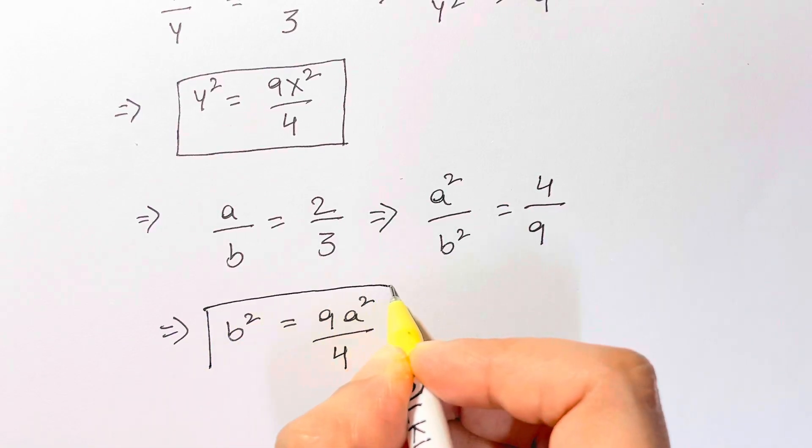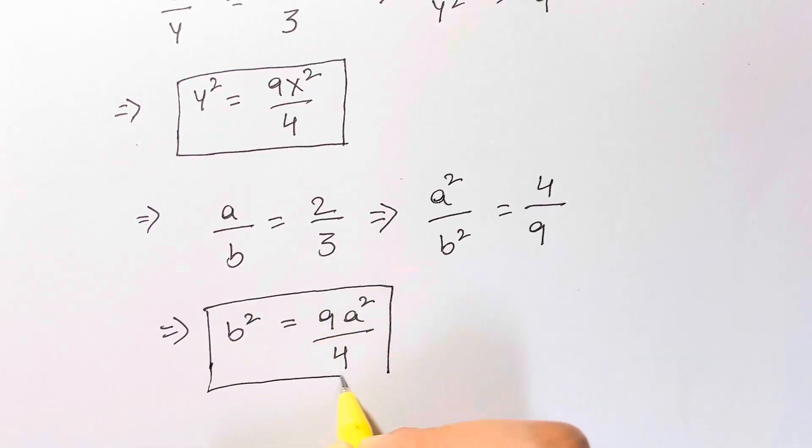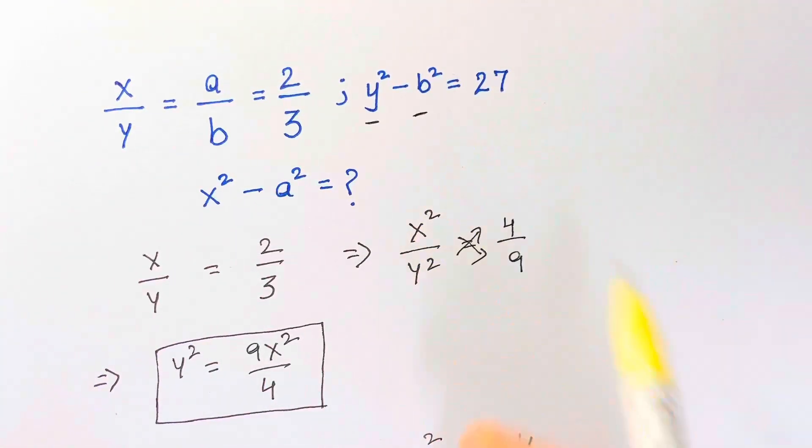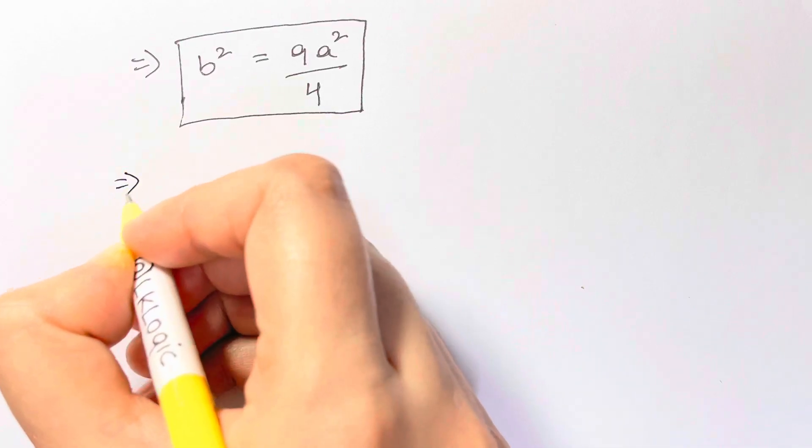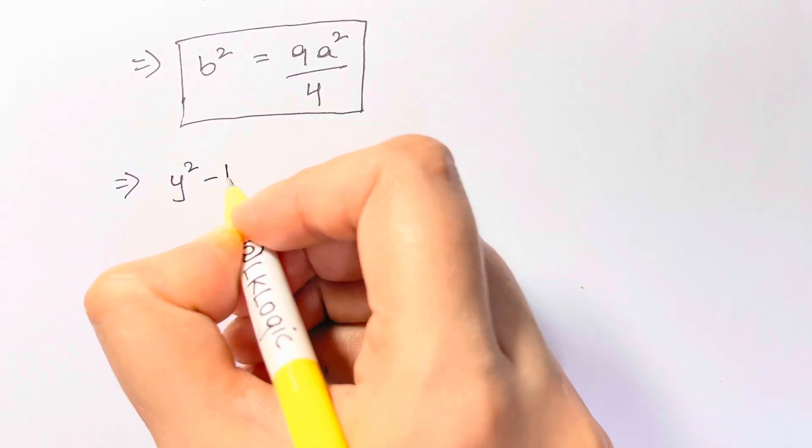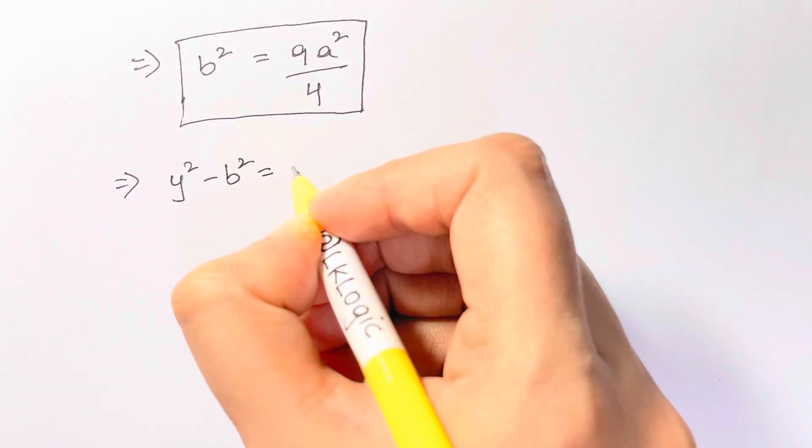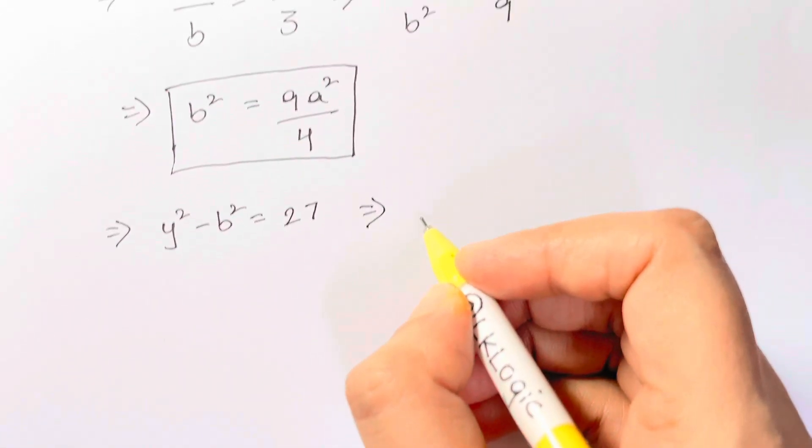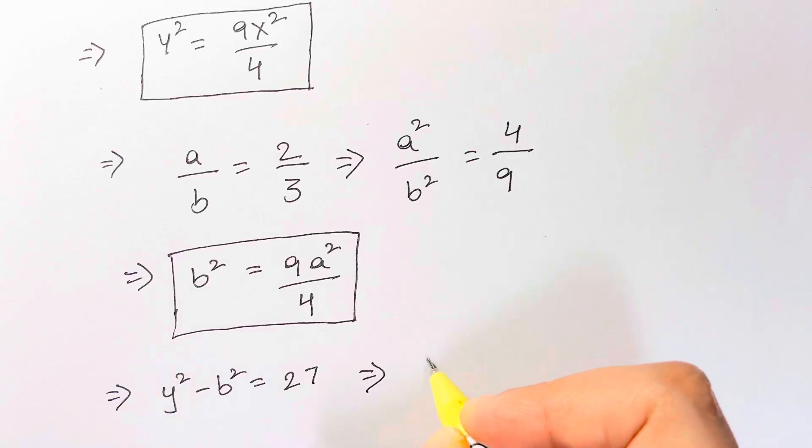So I've got y square and b square. Now what was our equation here? y square minus b square. So we have y square minus b square is equal to 27. So when I substitute, y square is nine x square over four minus b square is nine a square over four.